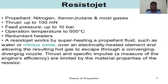Resistor jet: propellants include nitrogen, xenon, butane, and hydrazine. Thrust up to 100 millinewtons, feed pressure up to 10 bar, operating temperature up to 500 degrees with redundant heaters. A resistor jet works by superheating a propellant fluid such as water and nitrous oxide over an electrically heated element and allowing the resulting hot gases to escape through a converging-diverging nozzle. Thrust and specific impulse — a measure of the engine's efficiency — are limited by the material properties of the heater.